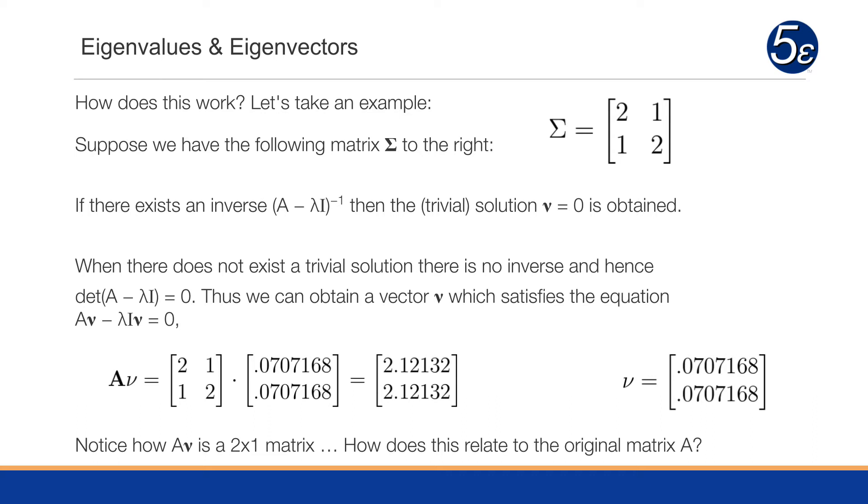So here we have a vector nu multiplied by A. We have our matrix A, 2, 1, 1, 2, multiplied by 0.0707168, and then 0.0707168. So that nu is a vector. When we multiply those two together, we get 2.12132 as a vector.